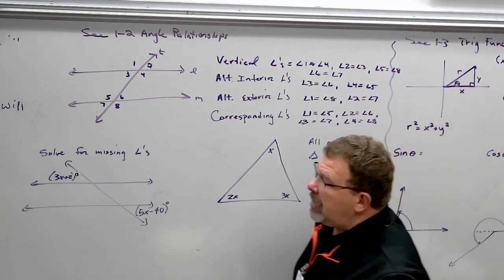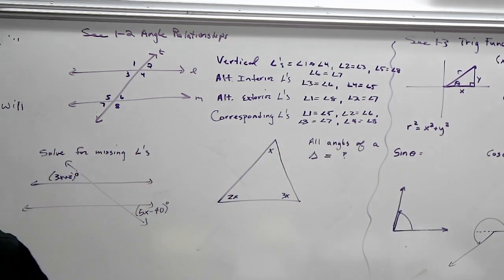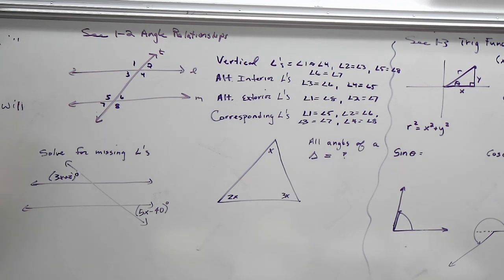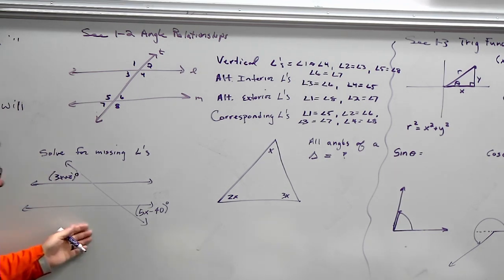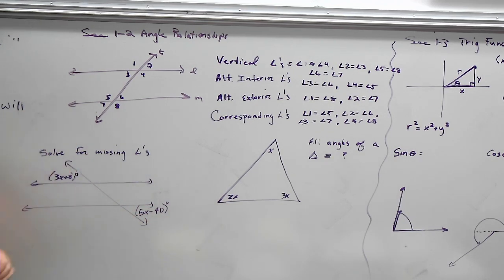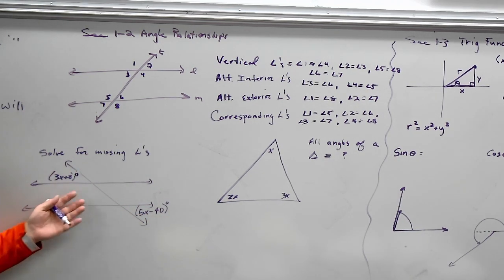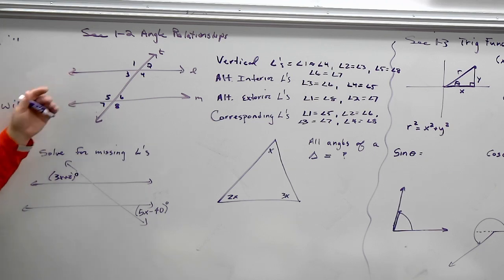Now, what would you call angles one and two? Supplementary — angle one plus angle two equals 180 degrees. How you're going to apply these is they'll give you different kinds of problems and just want you to find the missing angle. We're going to use the properties we just discussed. What would you classify these two angles as?